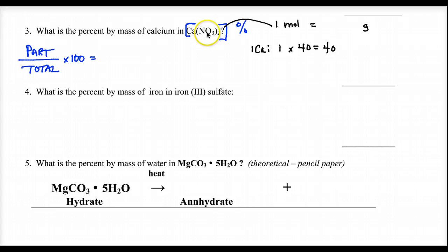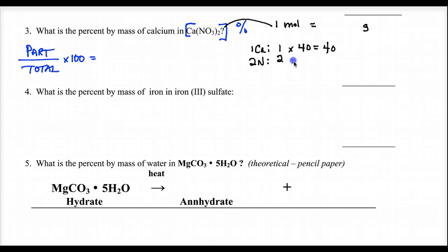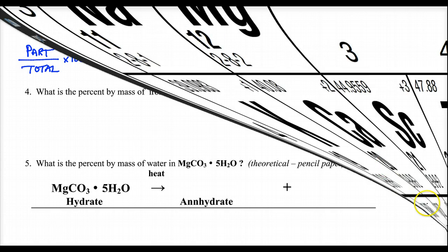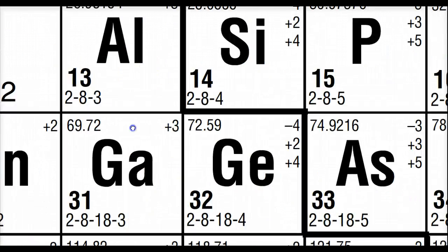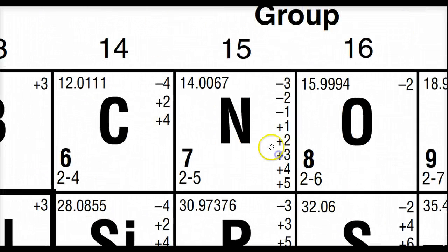How many nitrogens? There are two nitrate ions, so 2 times 1 is 2 nitrogens. Two times 14 — the atomic mass of nitrogen from the periodic table — gives 28.